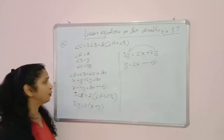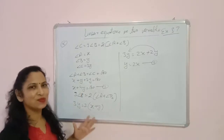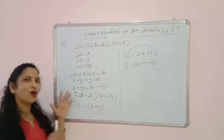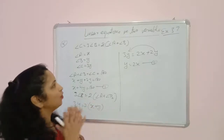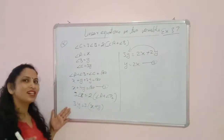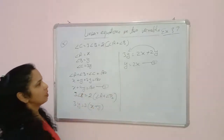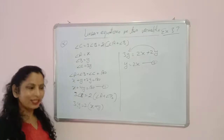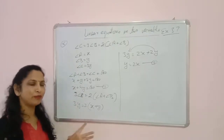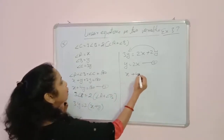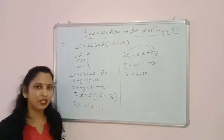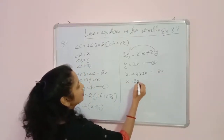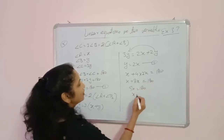Now using the substitution method: substitute y equals 2x from equation 2 into equation 1. We get x plus 4(2x) equals 180, so x plus 8x equals 180, giving 9x equals 180 and x equals 20. Then y equals 2 times 20 equals 40. And angle C equals 3y equals 3 times 40 equals 120 degrees.